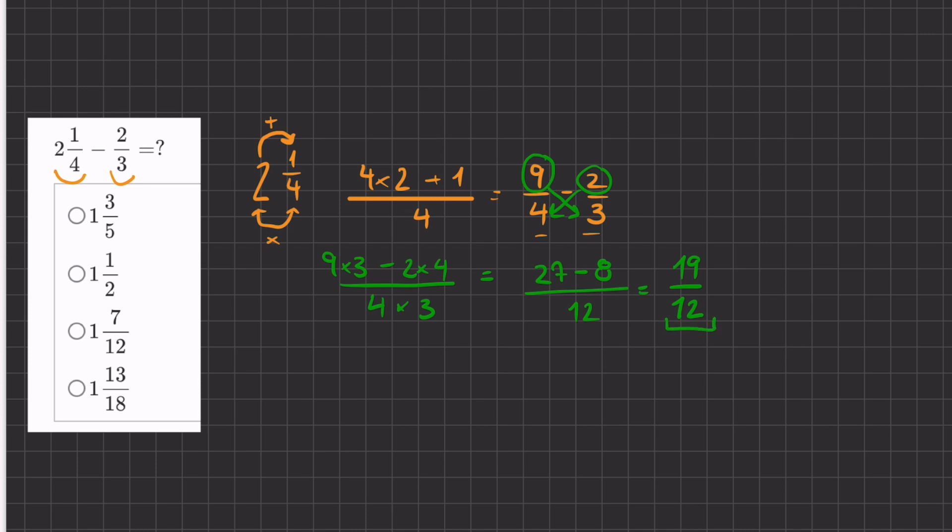And this is our answer but it's not in its simplest form. It's not in a mixed number form. So we do have to turn that into a mixed number and we'll do this by asking ourselves how many times does 12 go into 19? The answer is once. So our whole number is going to be 1.